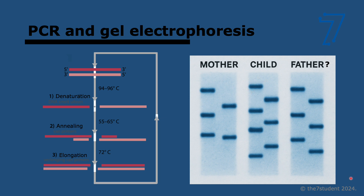What can you use this for? First, to test for coronavirus — you take a swab, amplify specific sequences using PCR, and if you find enough DNA of that sequence, you have COVID. That only uses PCR. To use both PCR and gel electrophoresis together, there's paternity testing. You take DNA from the child, mother, and suspected father, PCR it so you have enough, then do gel electrophoresis using short tandem repeats — sequences of bases repeated consecutively. Individuals vary in the number of repeats, resulting in different movements along the gel. If the child's pattern matches the father's, you know it's the dad, because short tandem repeats are inherited.